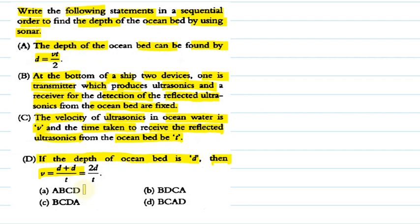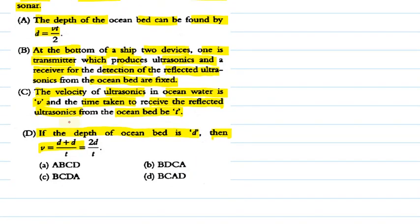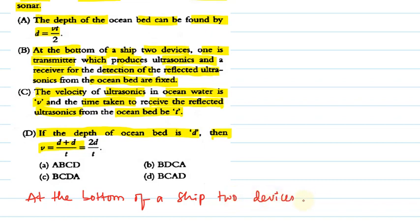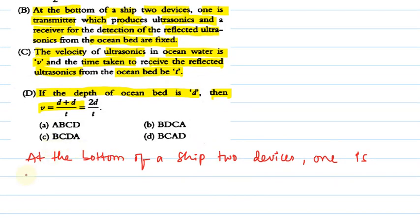Let us see the answer for this question. The first statement will be B: at the bottom of a ship, two devices — one is a transmitter which produces ultrasonics sounds.